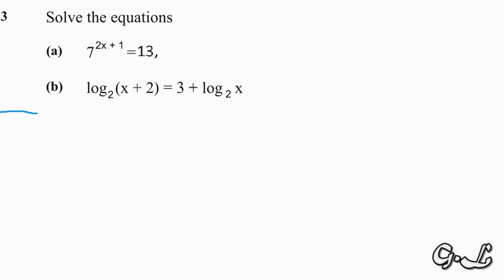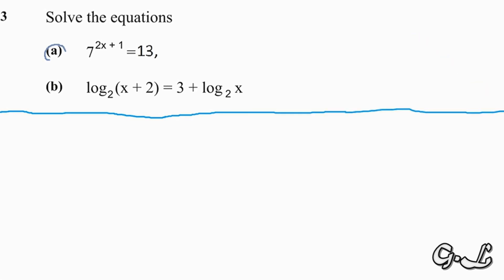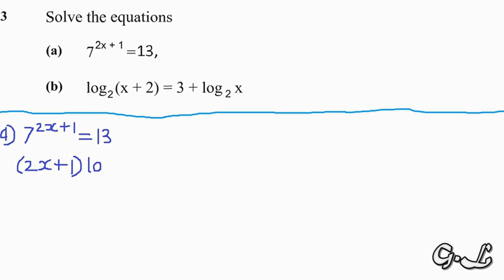Starting with Part A — the equation is 7 to the power 2x plus 1 is equal to 13. What we are going to do is introduce logs on both sides of the equation. On the left hand side, the power 2x plus 1 can come down when you introduce log.